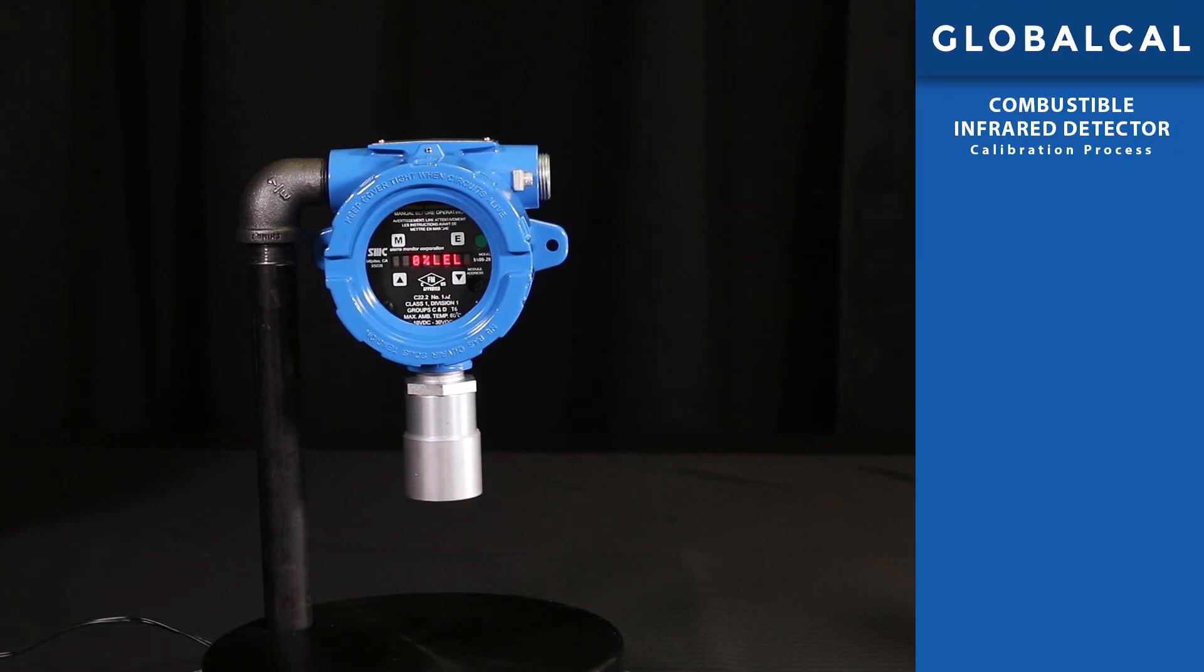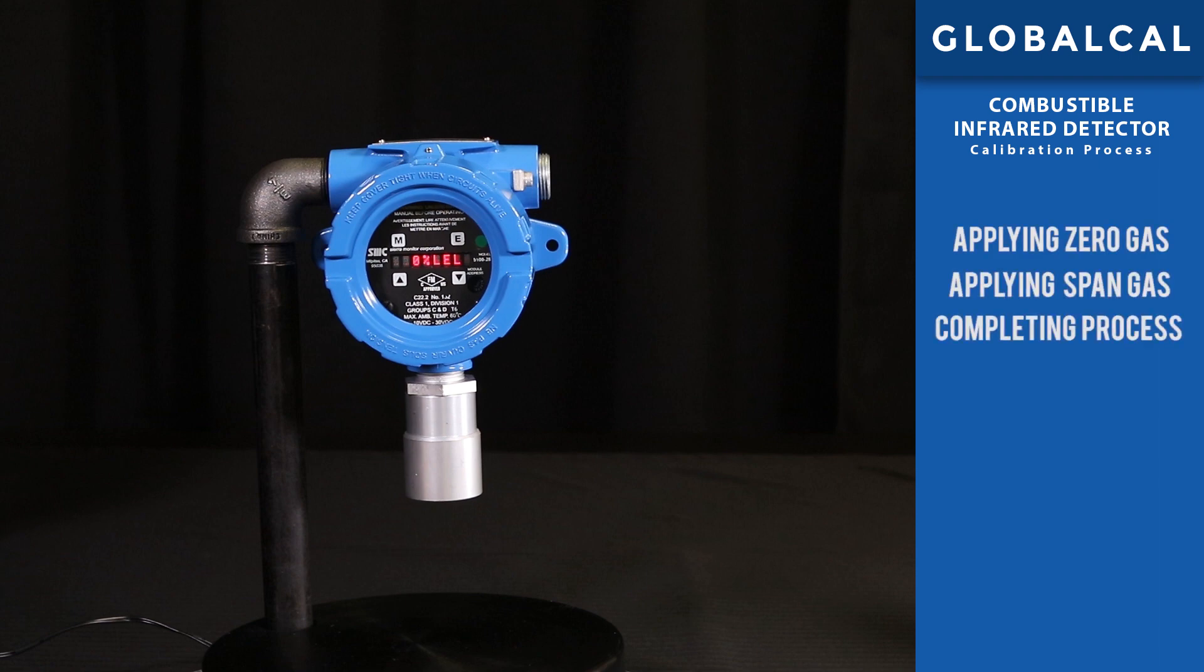The GlobalCal procedure consists of three steps: applying zero gas, applying span gas, and completing the process.